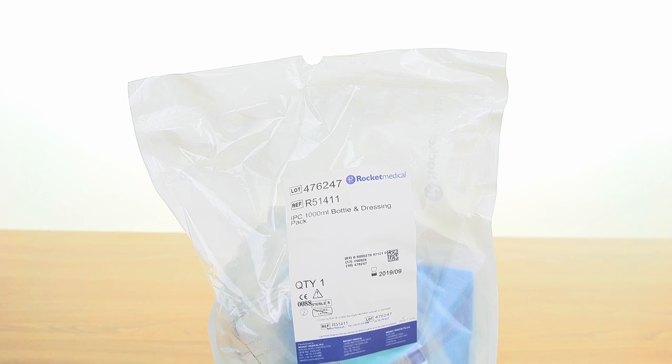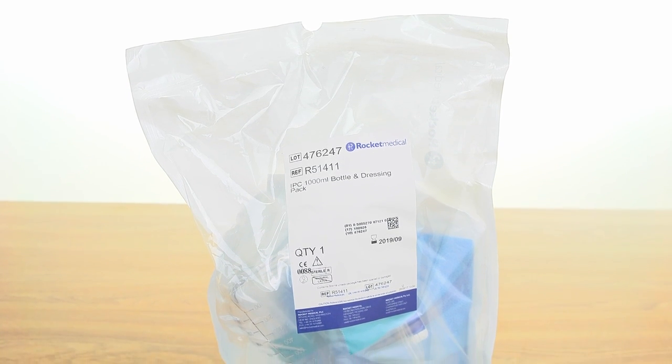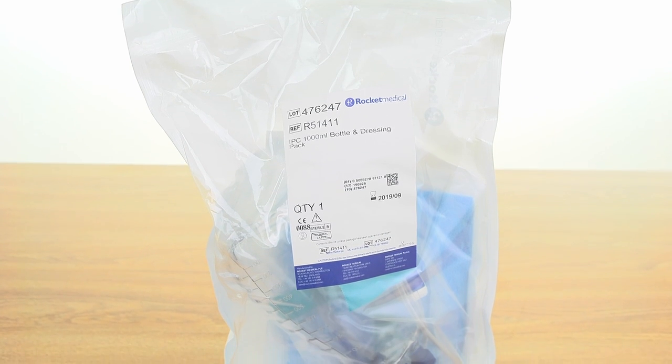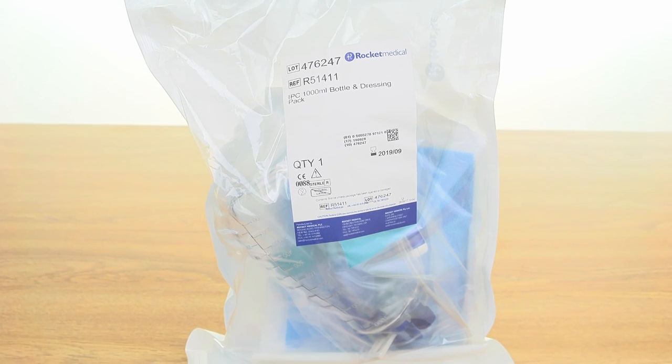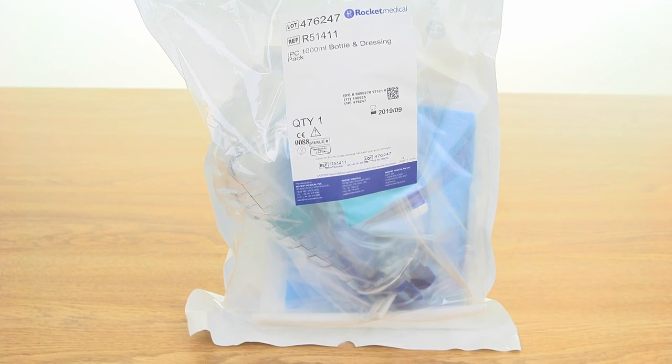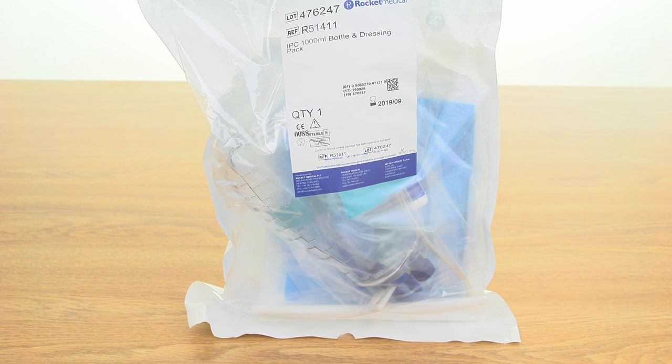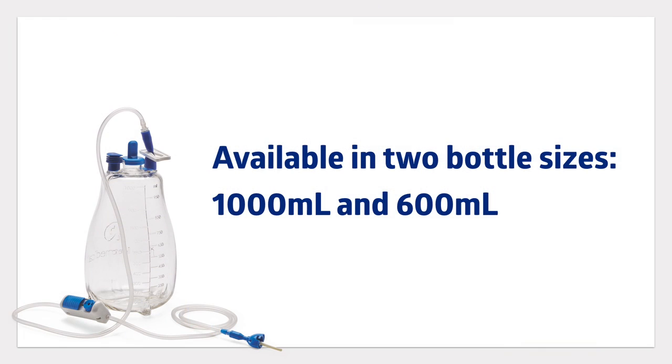The ROCKET IPC Pleural Drainage System comes packaged as a sterile kit, which includes everything you need to properly drain fluid, as well as instructions on how to use the ROCKET collection bottle. There are two bottle sizes available, 1000 milliliters and 600 milliliters. Both bottles work exactly the same, providing suction to drain the patient's pleural or peritoneal cavity.